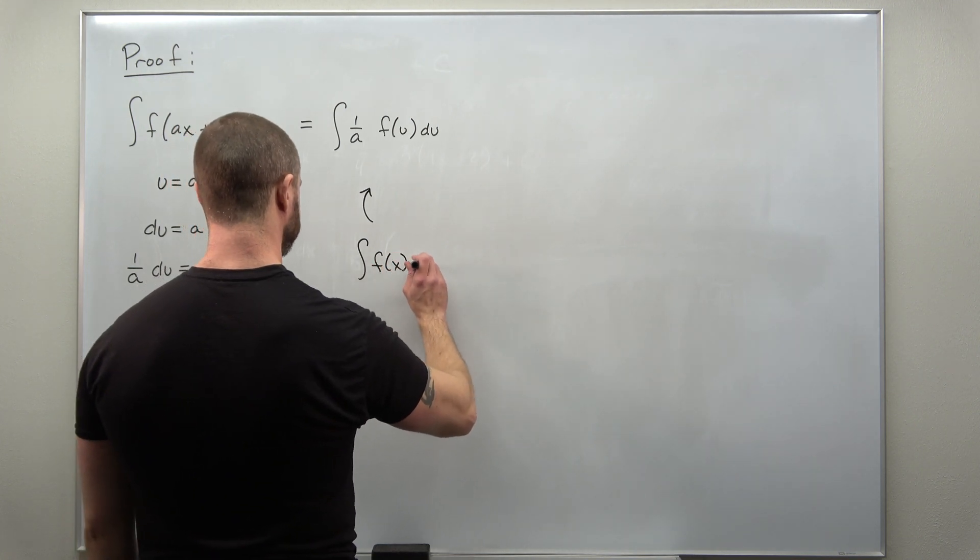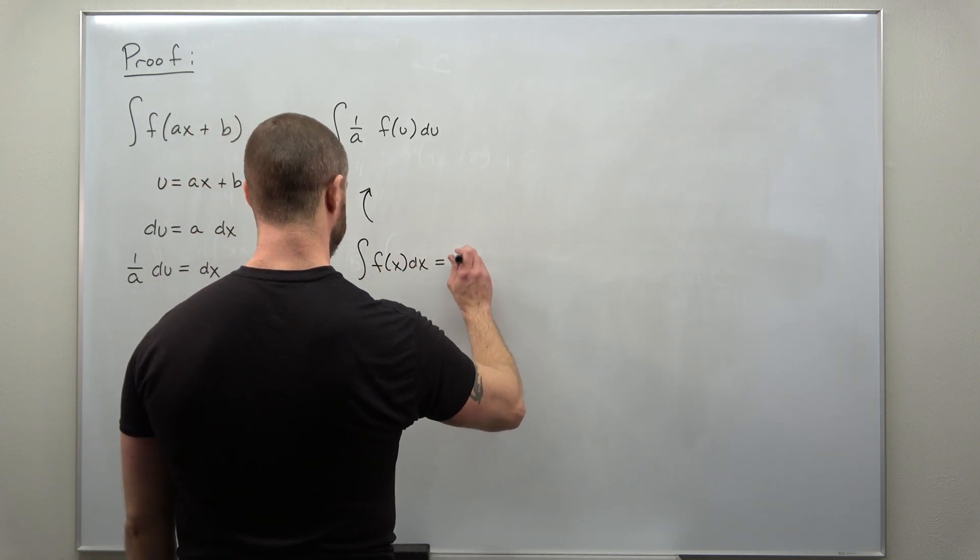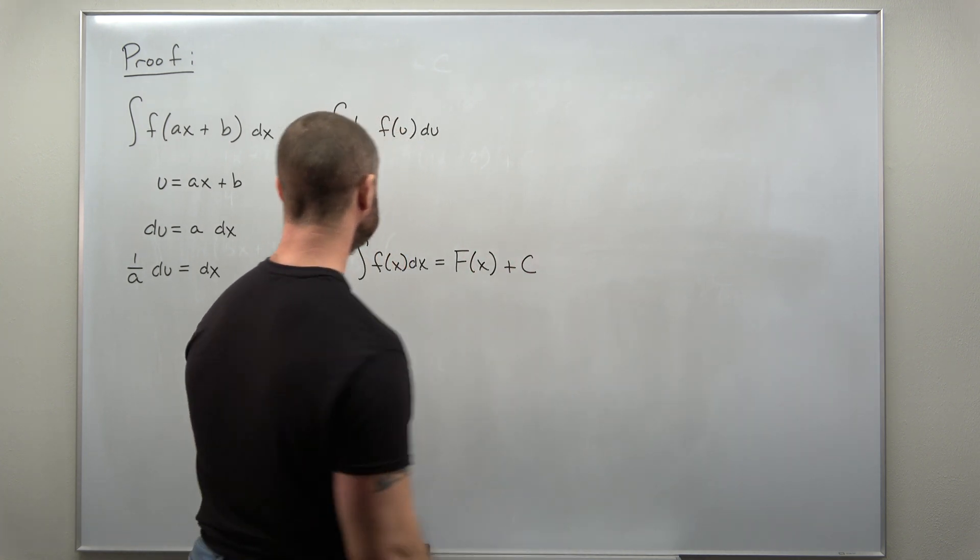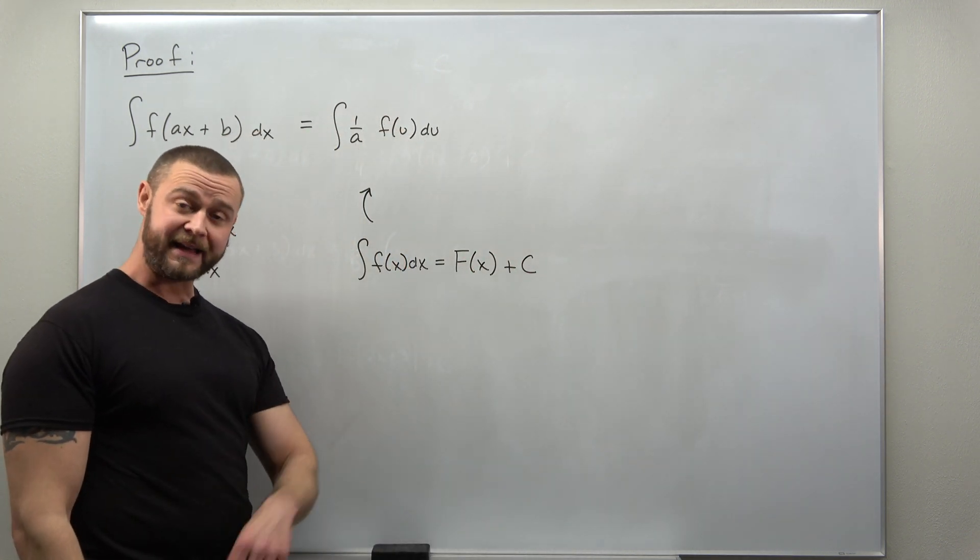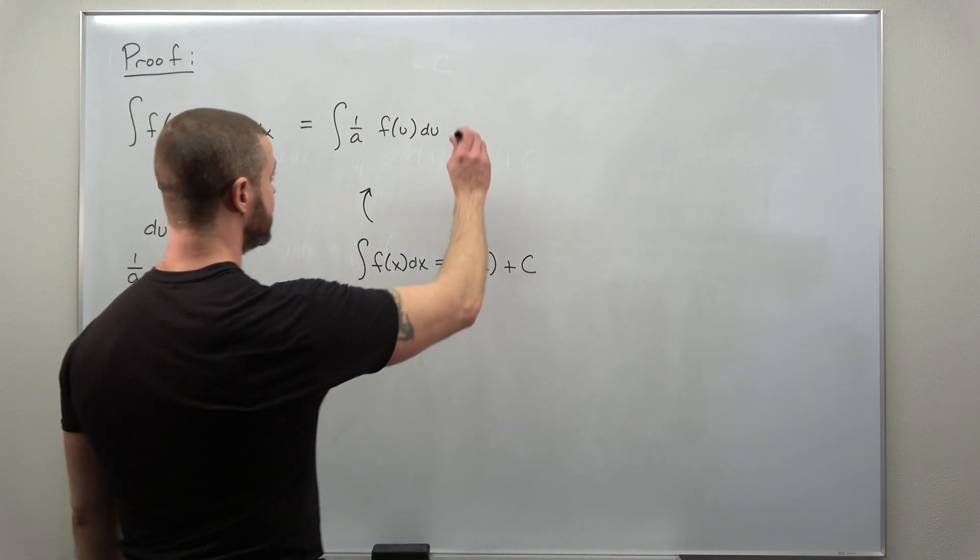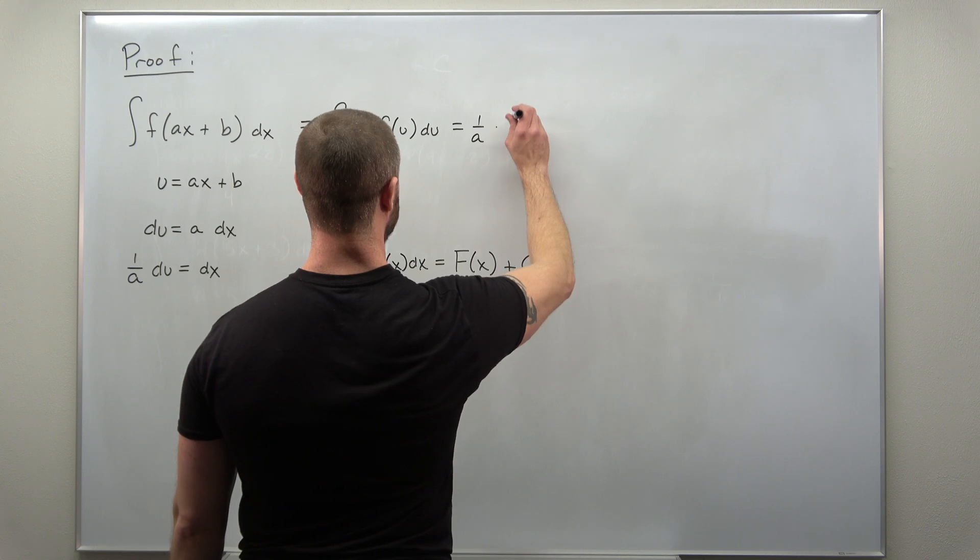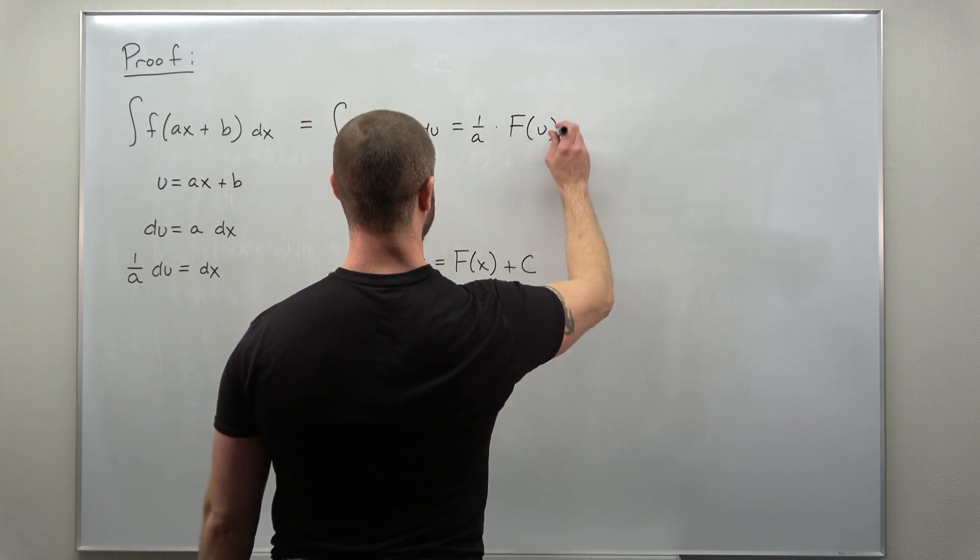So if we were to write that symbolically, the basic antiderivative, we're calling that capital F of x. We can get that antiderivative in terms of u. This is now 1 over a times capital F of u.